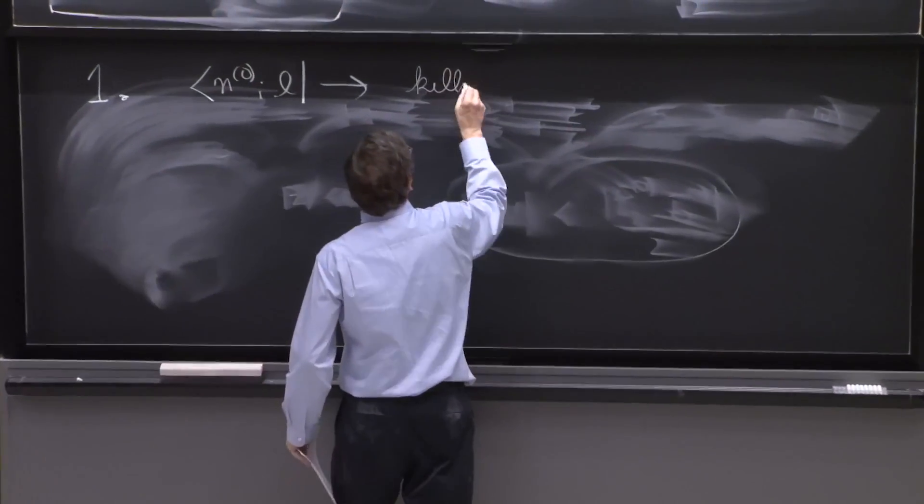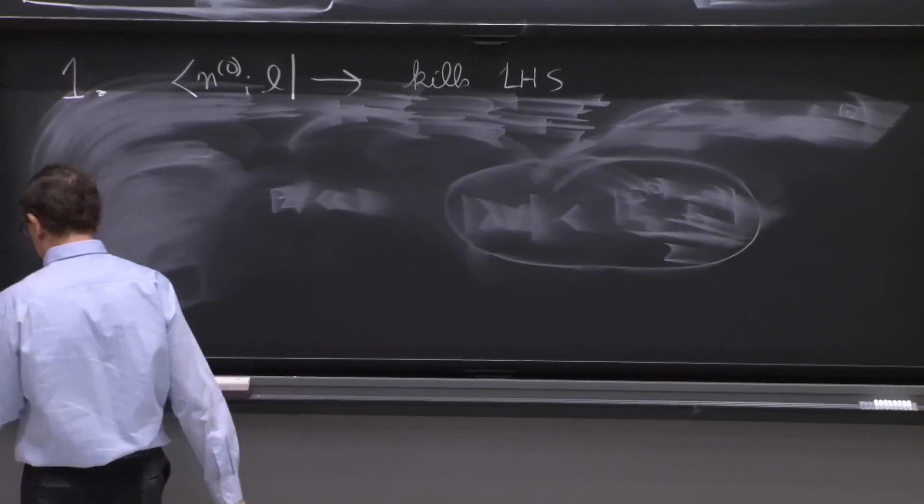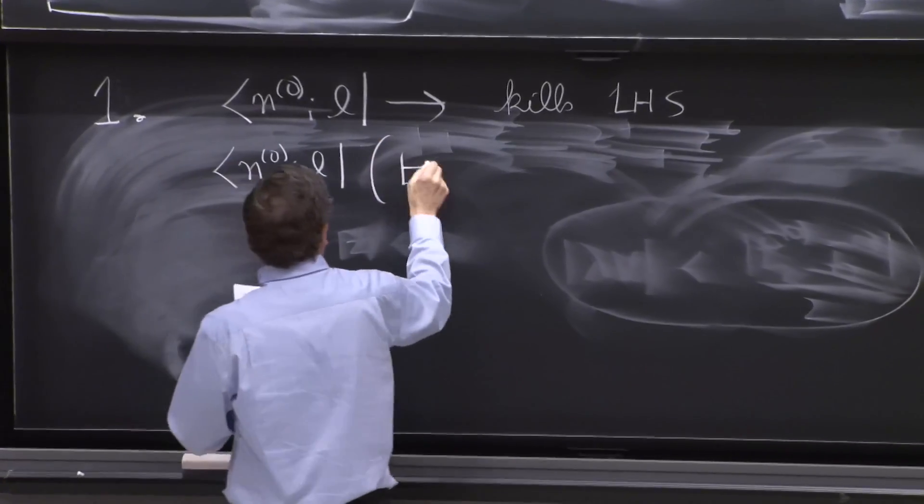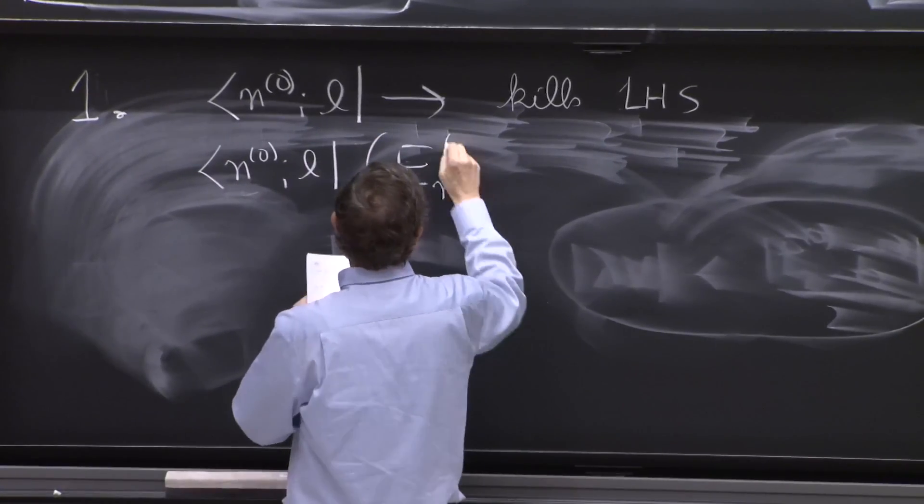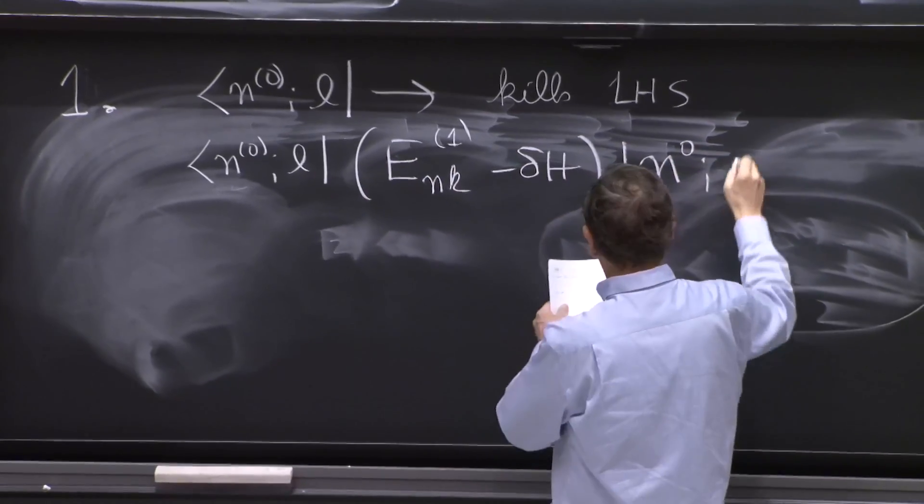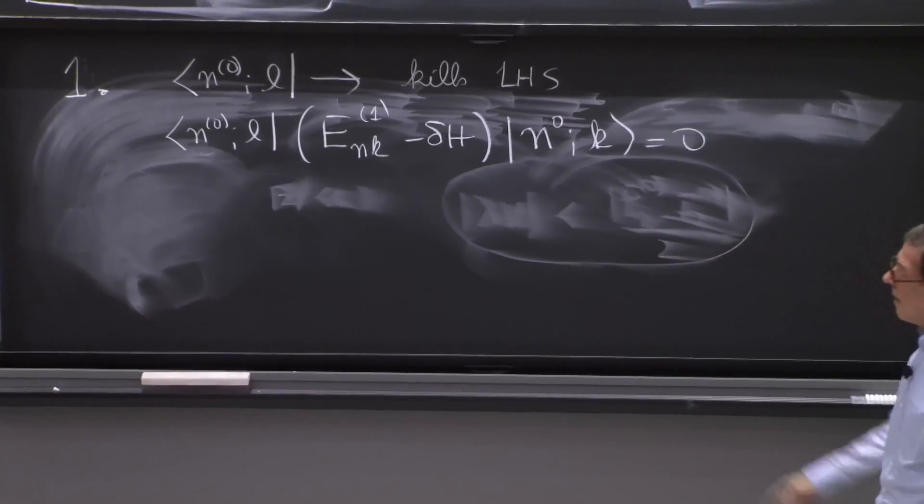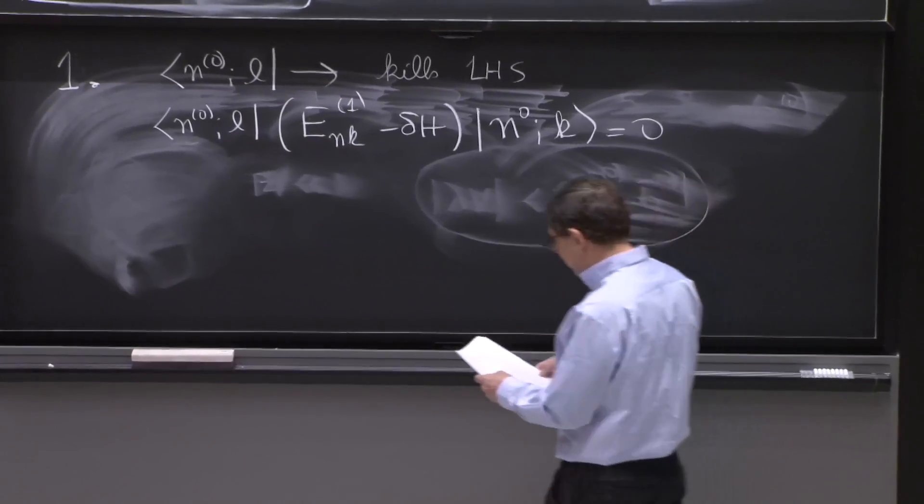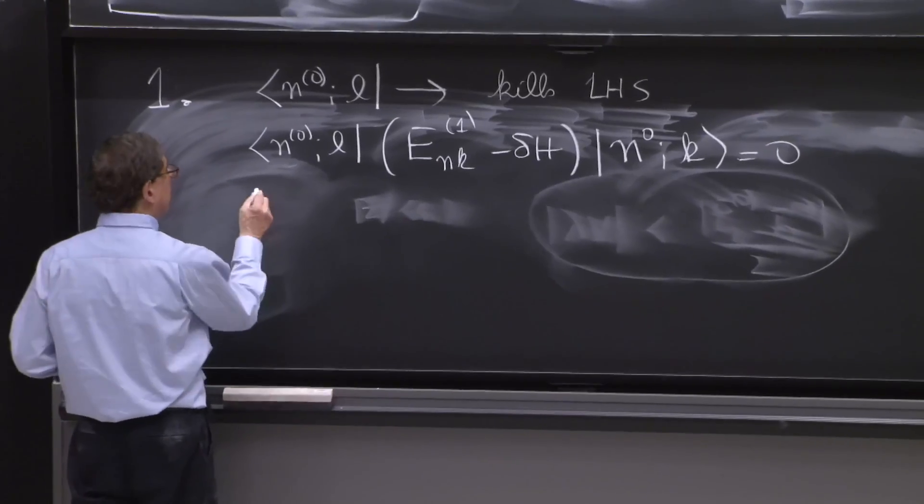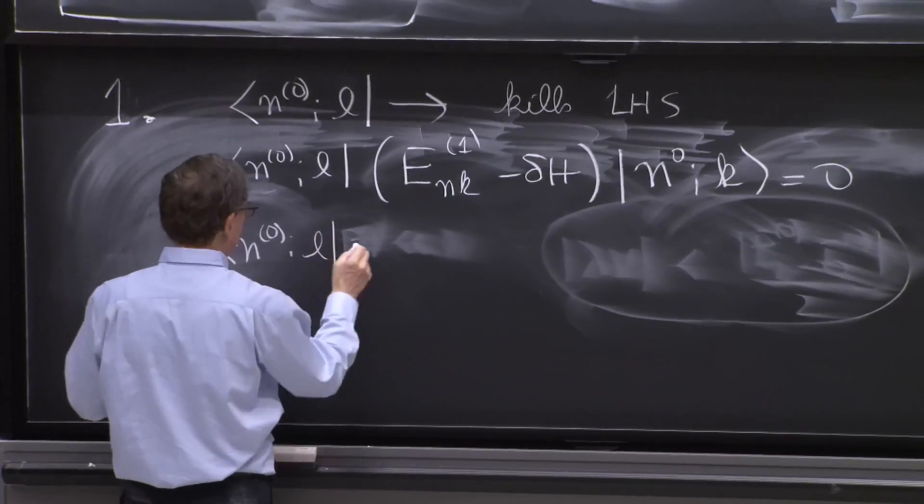So we just look at the right-hand side, and we get n0l enk1 minus delta H n0k equals zero. That was the right-hand side. So far, so good. Nice and simple. So from here, what do we get?